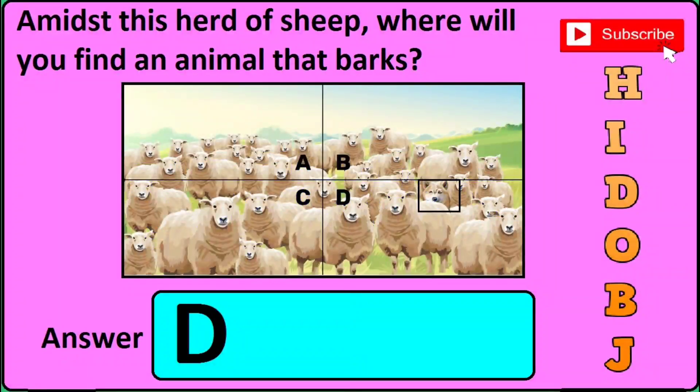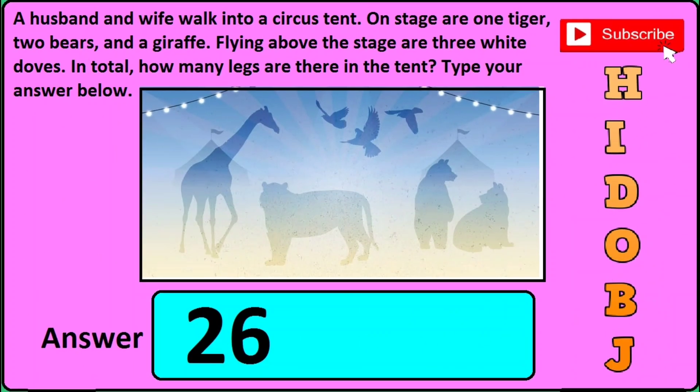Now in version three of this same question, you can see that a dog is in D, so you need to click D in the answer box. There may be one more version, so if you don't find any dog in any quadrant, just click B — the dog may be in the B quadrant.